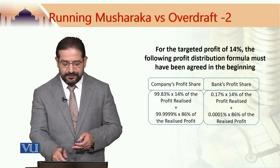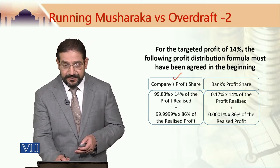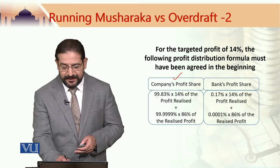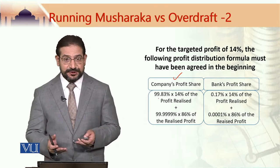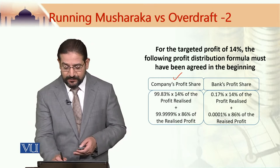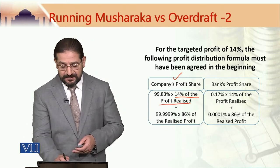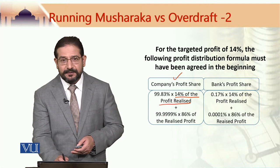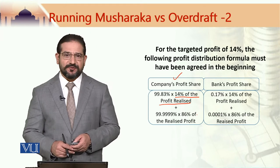For example, the company's profit share would be determined by 99.83%, which is the investment share of the company, multiplied with 14% of the profit realized, plus 99.999% of 86% of the realized profit.